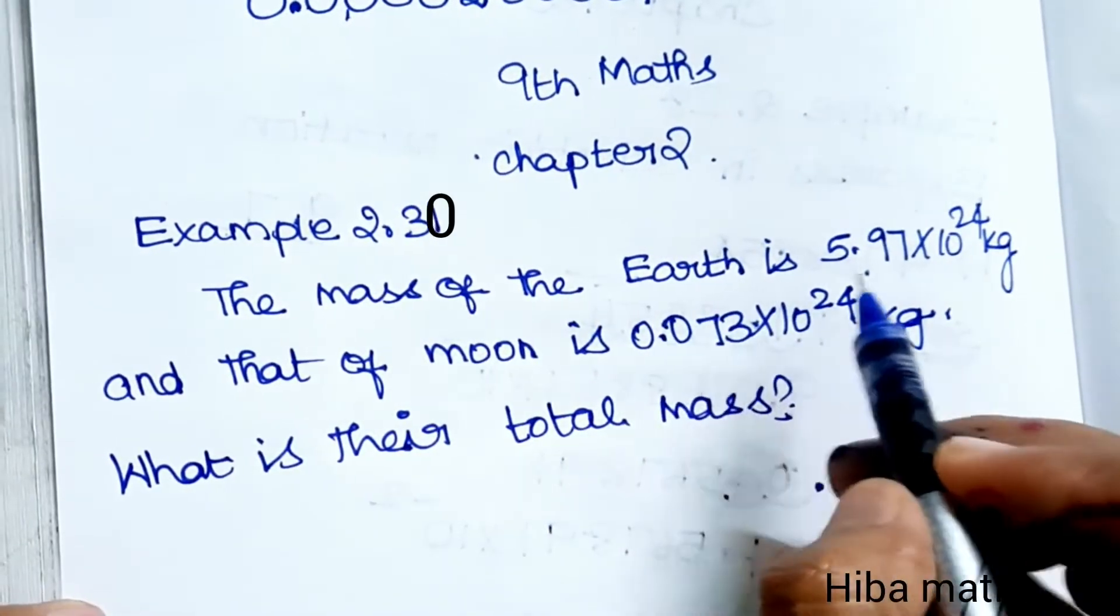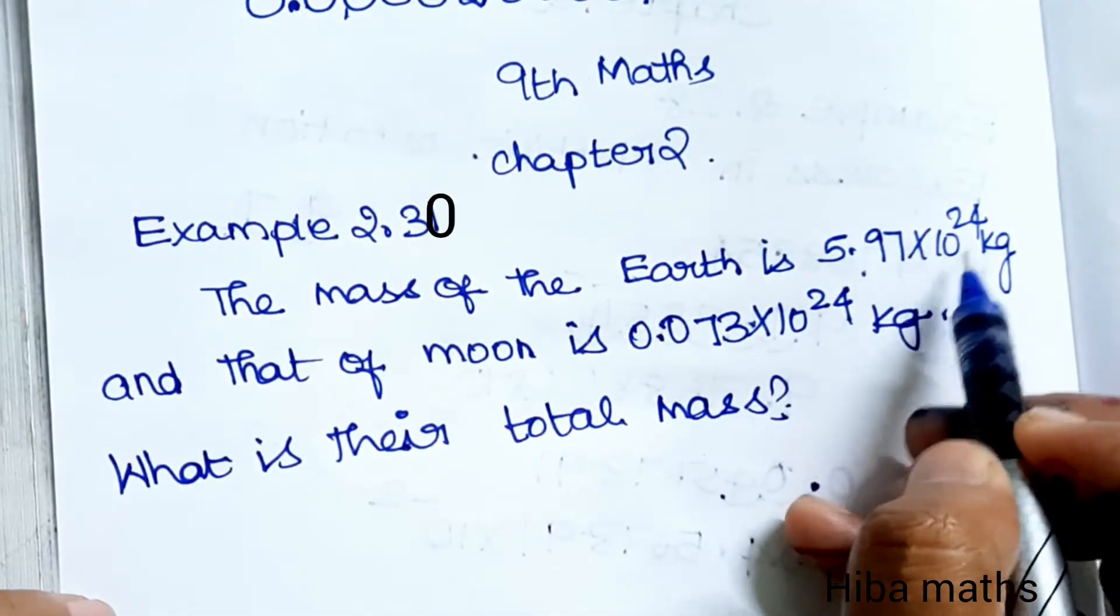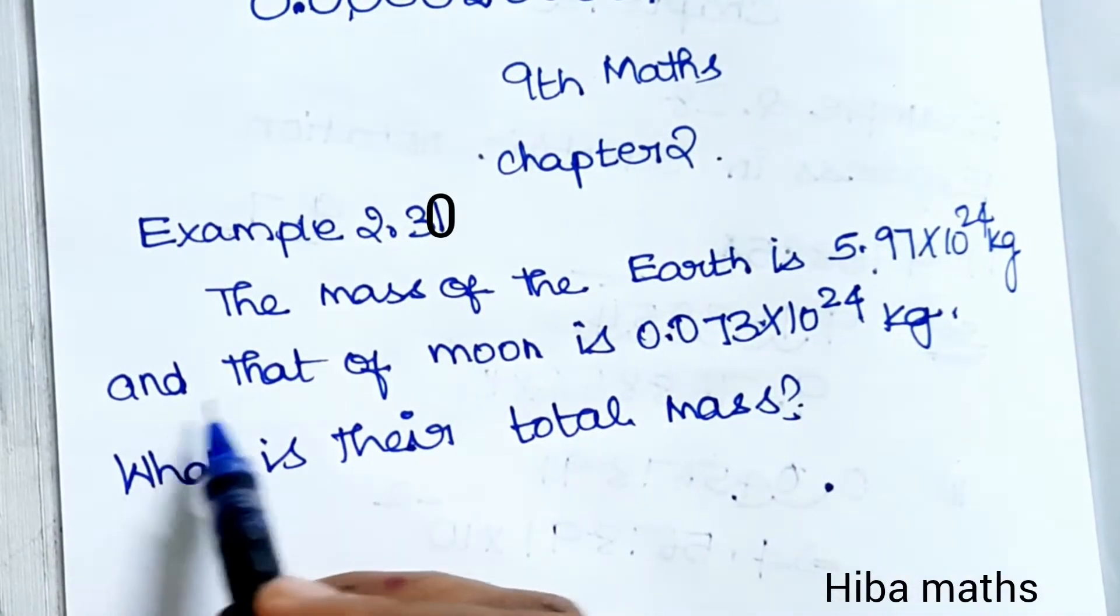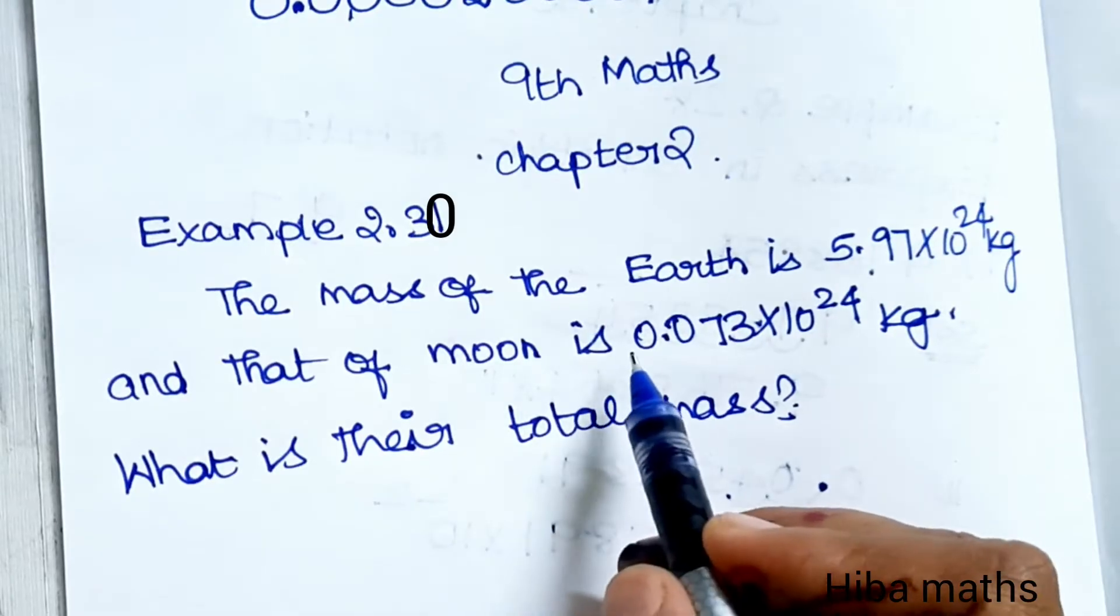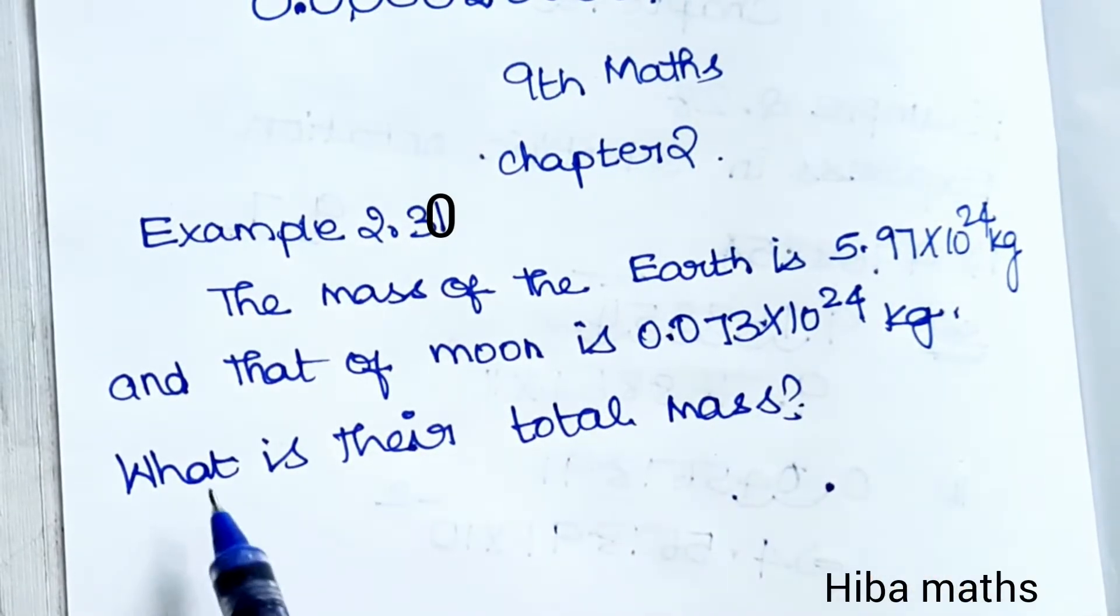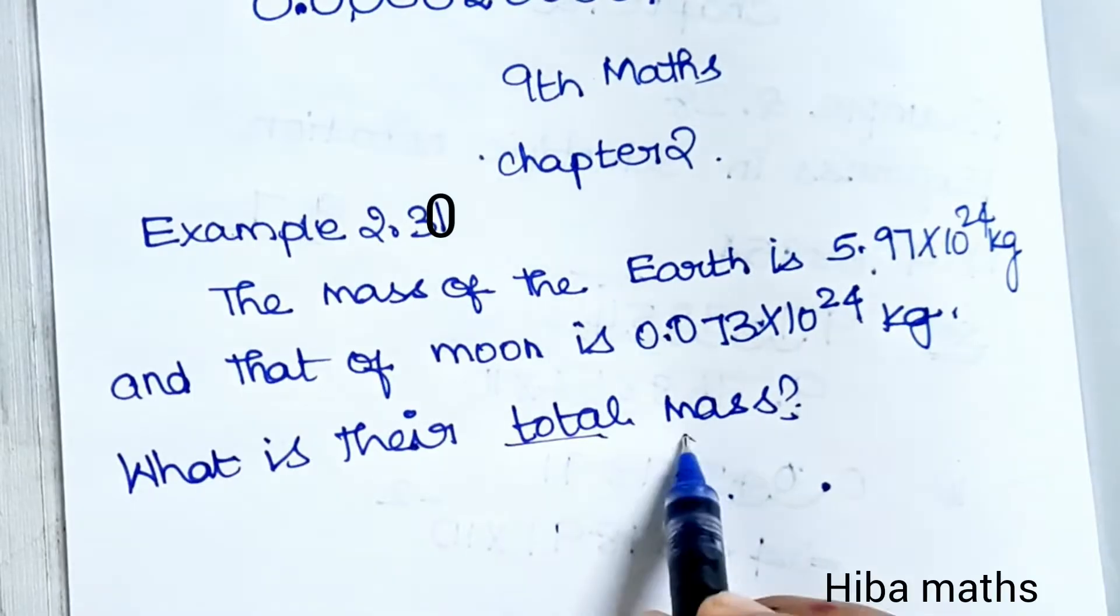The mass of the Earth is 5.97 × 10^24 kg and that of the Moon is 0.073 × 10^24 kg. What is their total mass?